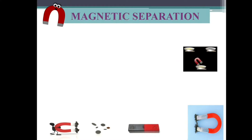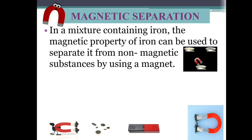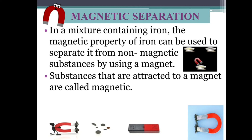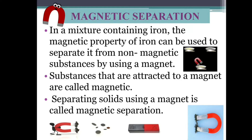Magnetic separation is used to separate magnetic elements from substances or mixtures. In a mixture containing iron, the magnetic property of iron can be used to separate it from non-magnetic substances using a magnet. Substances that are attracted to a magnet are called magnetic. Separating solids using a magnet is called magnetic separation.